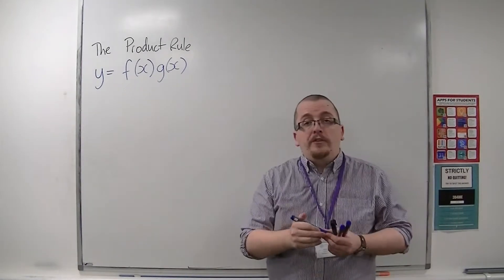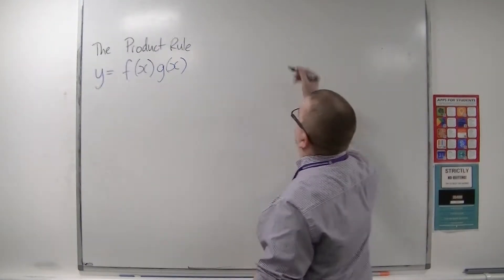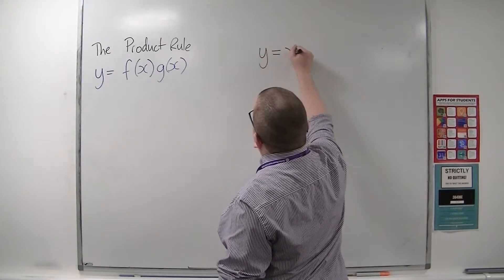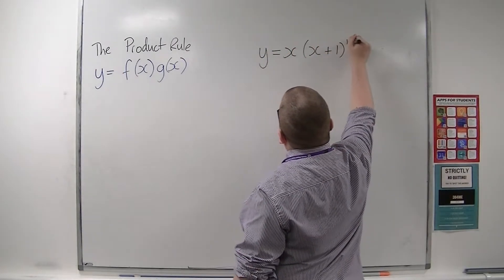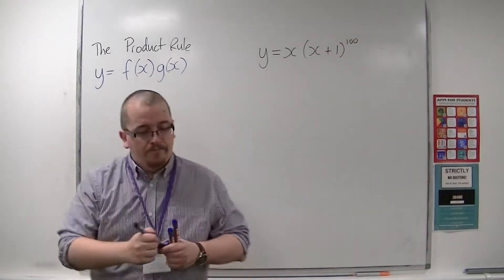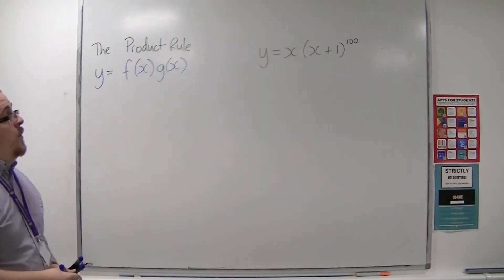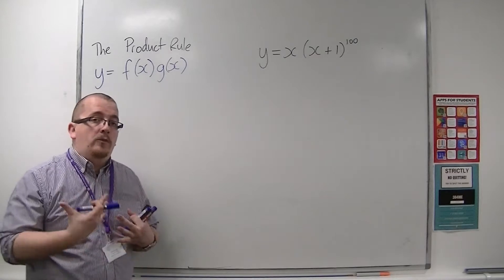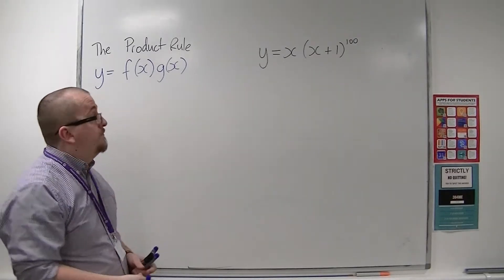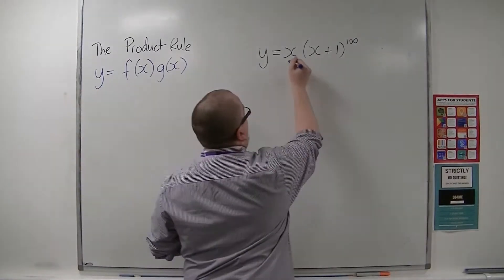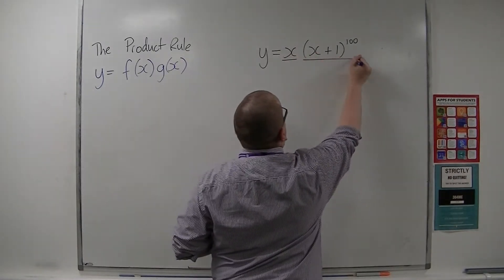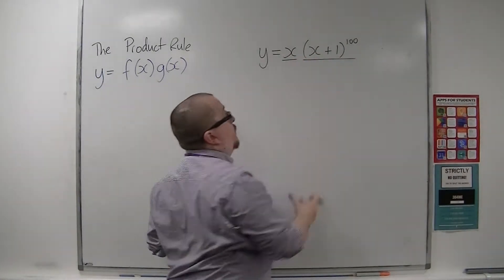So for example, we might want to differentiate something that looks like this. So y is equal to x times x plus 1 to the power of 100. This is a product of two functions: x and x plus 1 to the 100.